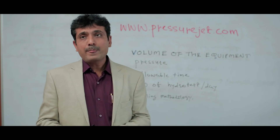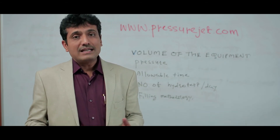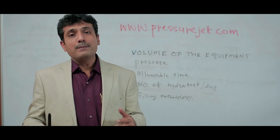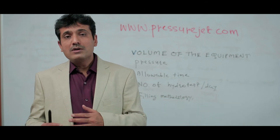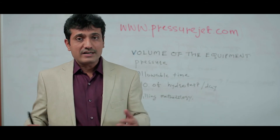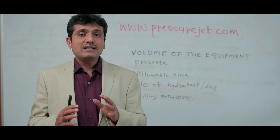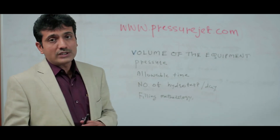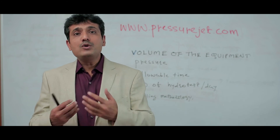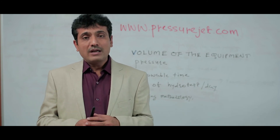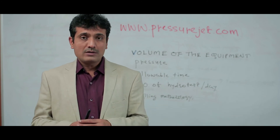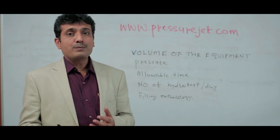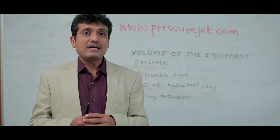The fourth parameter is number of hydrotests per day. In the case of gas cylinders, rubber hoses, valves, or pump components, knowing how many components are to be tested per day is very important so we can design the entire system accordingly. The fifth parameter is filling methodology — whether you already have a means to fill the volume or whether we need to provide a filling pump as part of the system. These are the important parameters one should provide so that we can select the right hydrotest system.